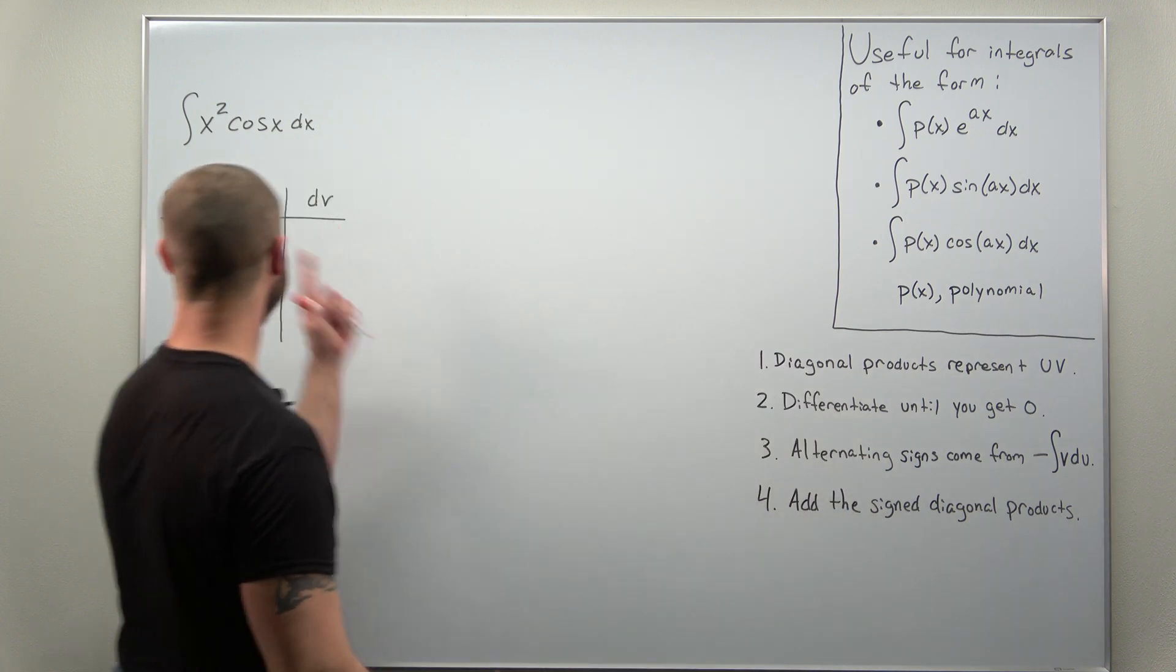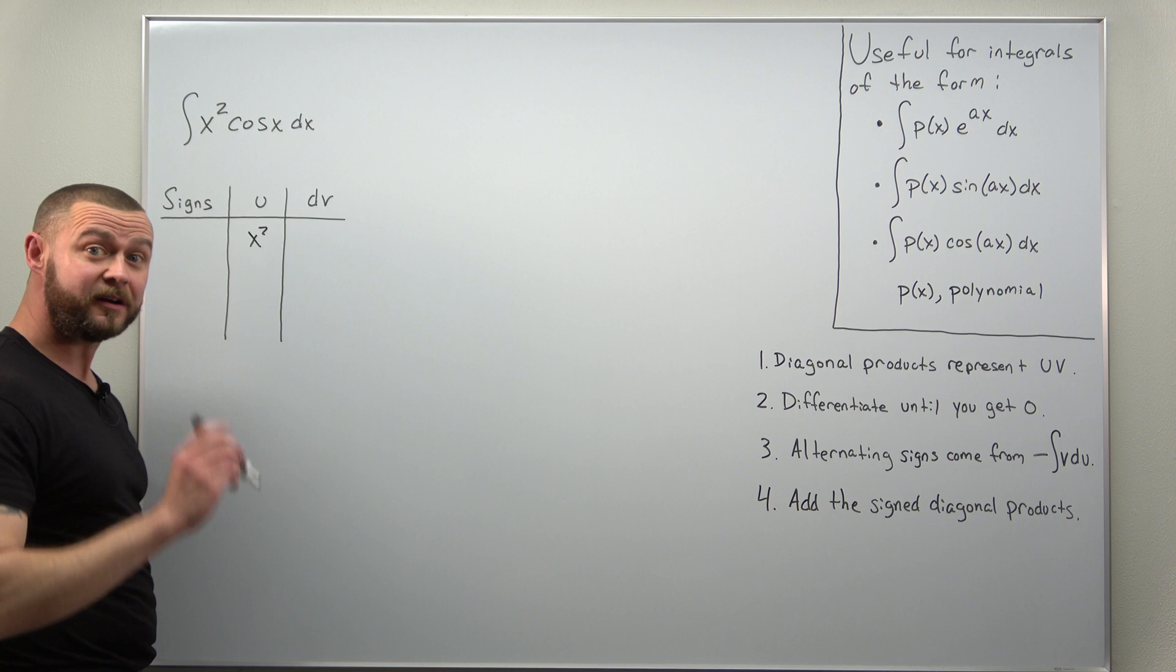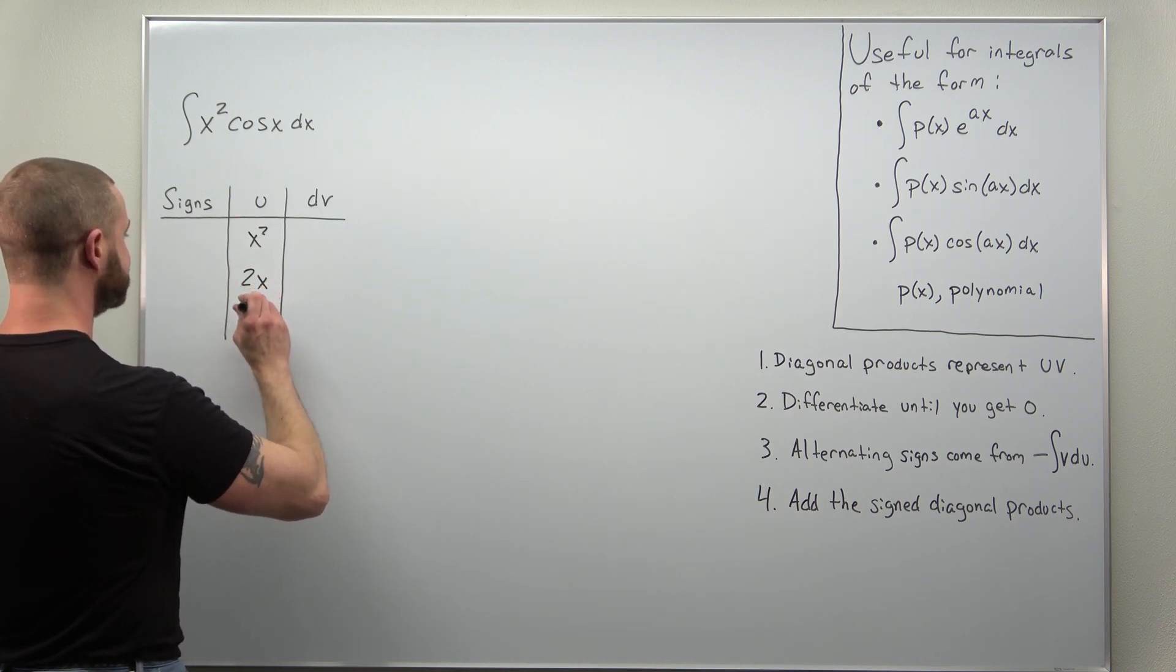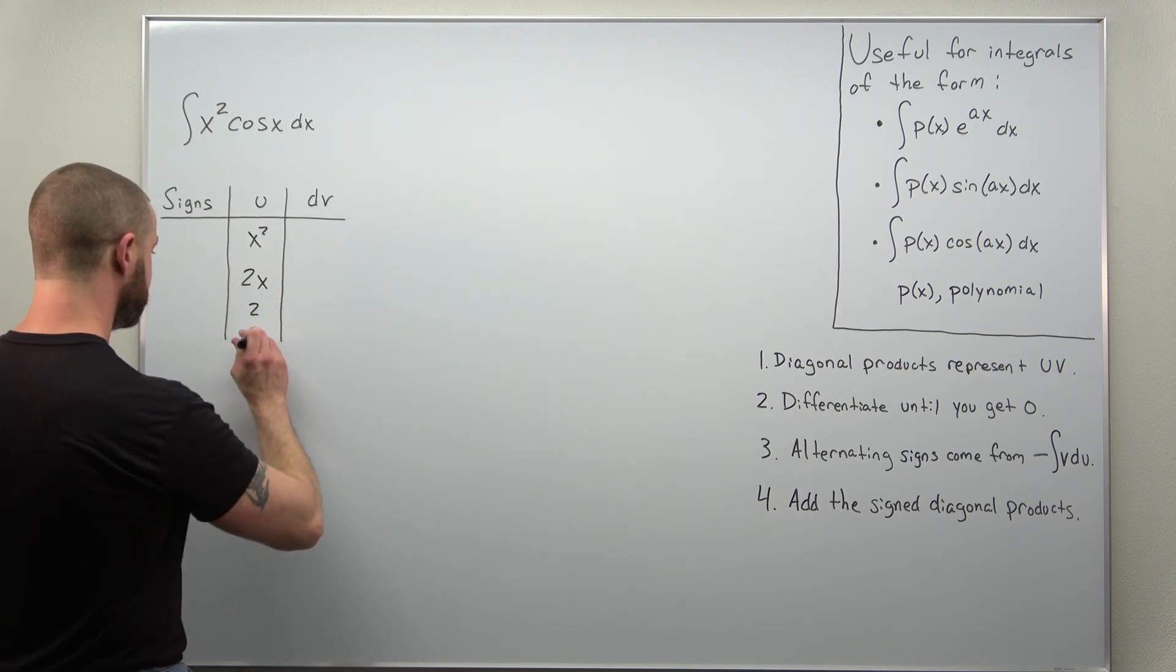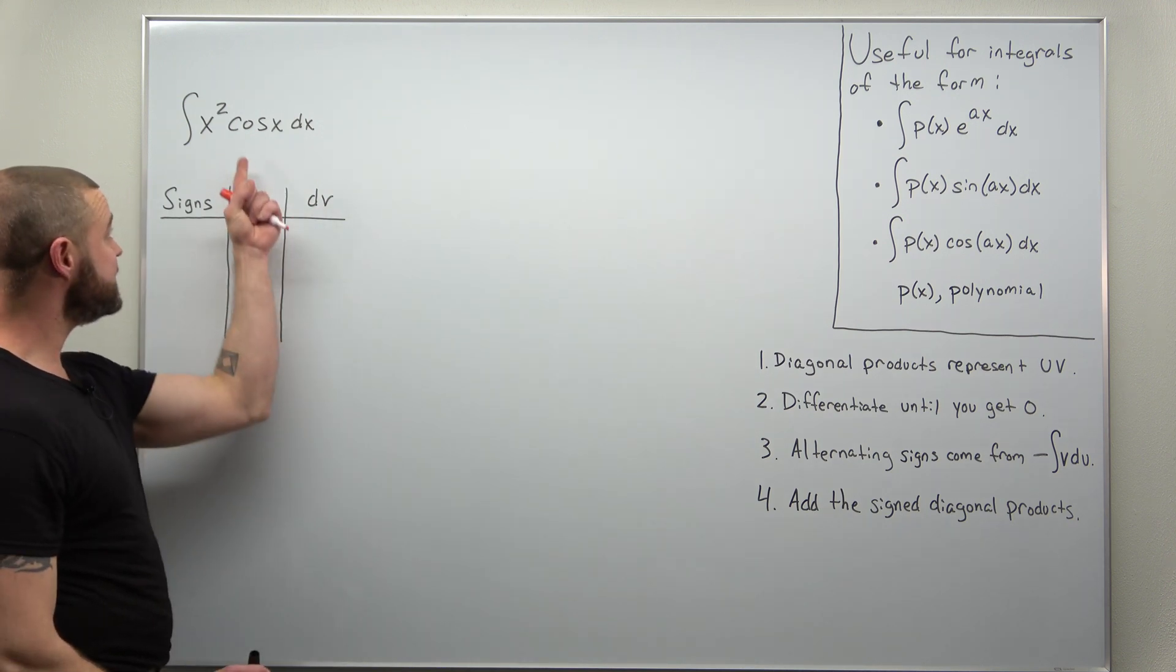Make your choice for u here as x squared. Repeatedly differentiate that. The first derivative will be 2x, then 2, and then 0. Your choice for dv would then be cosine of x.